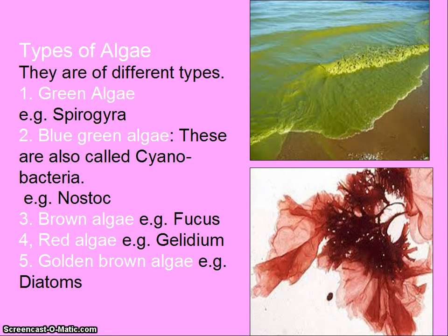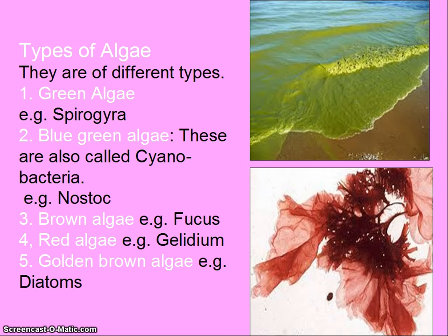Types of algae: the first is green algae, example Spirogyra. The second is blue-green algae, also called cyanobacteria, example Nostoc. The third is brown algae, example Fucus. The fourth is red algae, example Gelidium. The fifth is golden-brown algae, examples are diatoms.